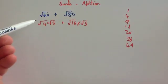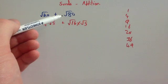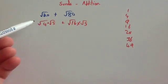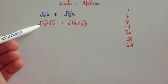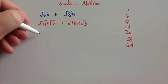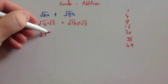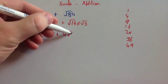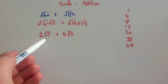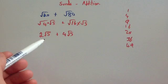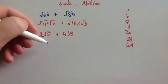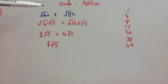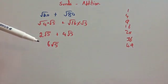So we've got root 20 as root 4 times root 5, and root 80 as root 16 times root 5. Remember the benefit of writing it as a square number means you can square root it. The square root of 4 is 2, so that gives 2 root 5; the square root of 16 is 4, so that's 4 root 5. So we've got 2 root 5 plus 4 root 5, which altogether is 6 root 5. So root 20 plus root 80 equals 6 root 5.